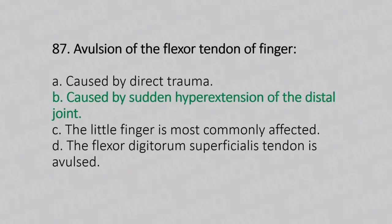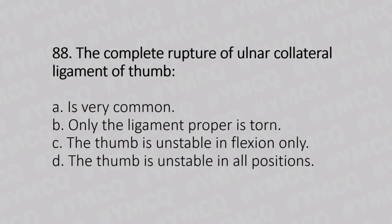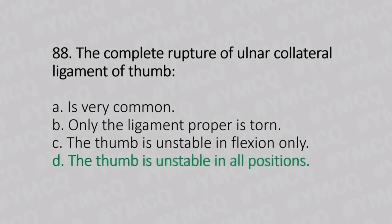Now let's move to question number 88. The complete rupture of the ulnar collateral ligament of the thumb. Option A: is very common. Option B: only the ligament proper is torn. Option C: the thumb is unstable in flexion only. Option D: the thumb is unstable in all positions. And the answer is Option D, the thumb is unstable in all positions.